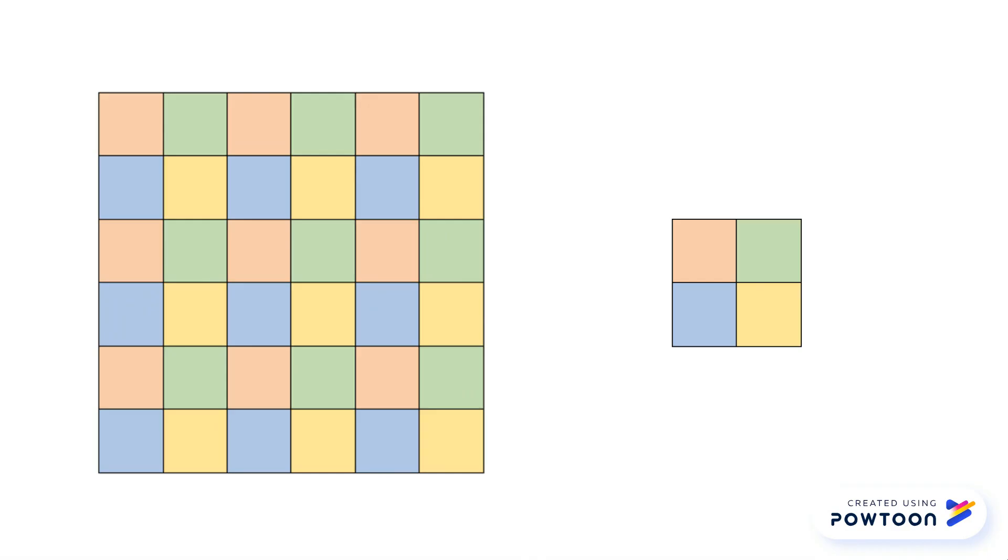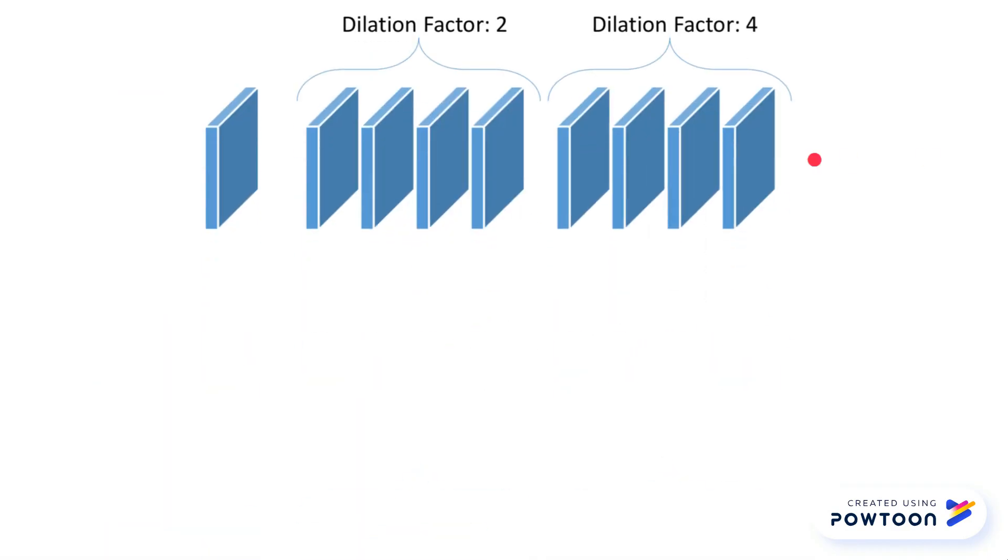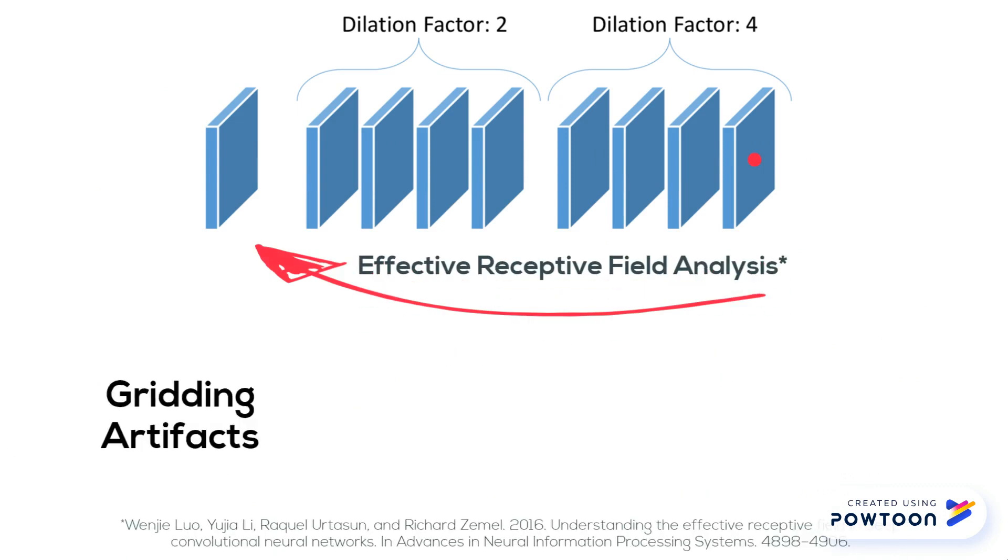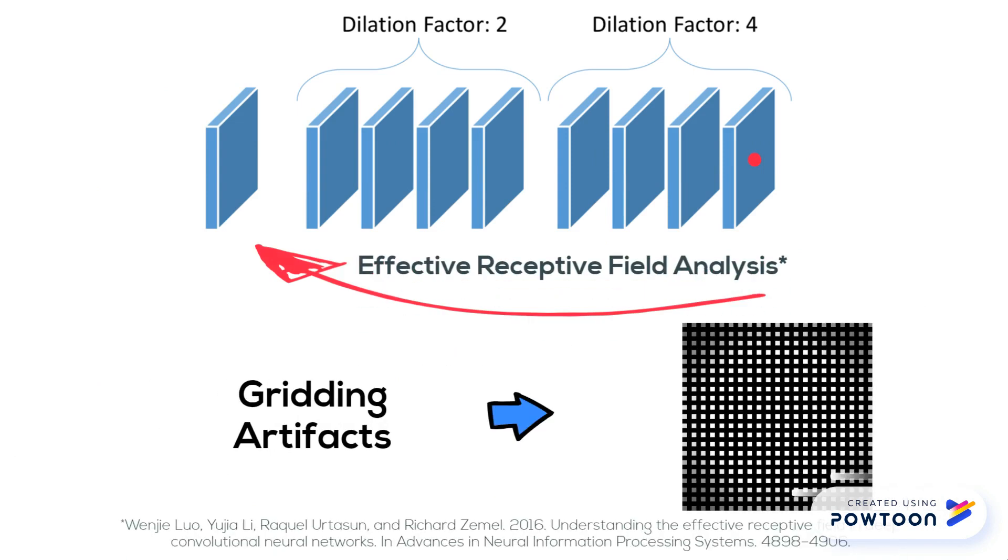For models that stack dilated convolutions together, the effective receptive field analysis clearly visualizes the gridding artifacts.